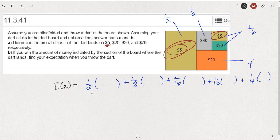We have a 1 in 2 probability of gaining $5, 1 in 8 probability of gaining $30, 1 in 16 for $5 and also for $70, and a 1 in 4 probability of gaining $20. There's no loss, so everything is positive.